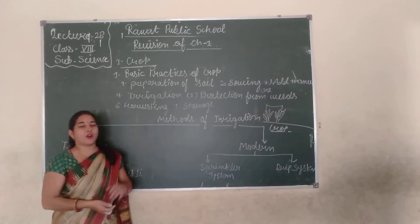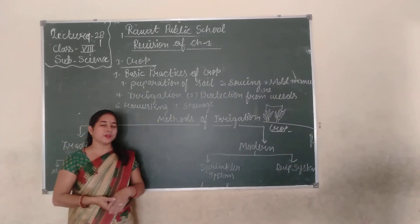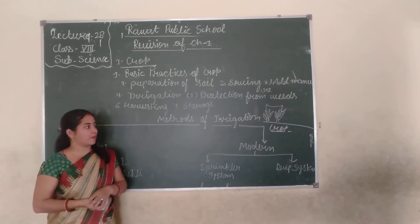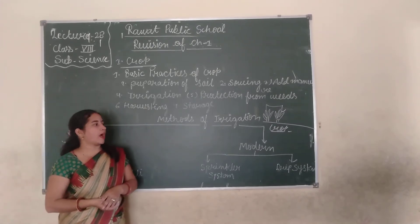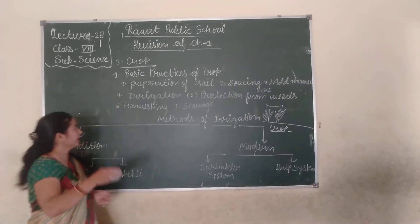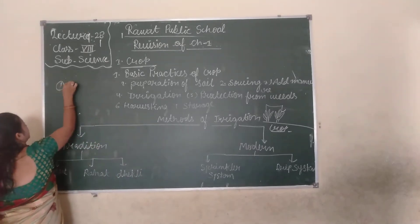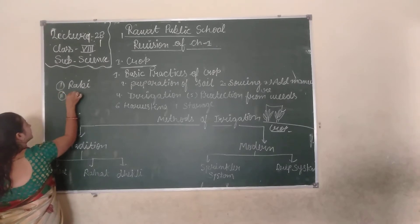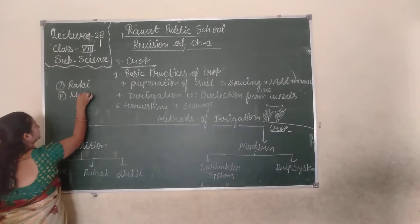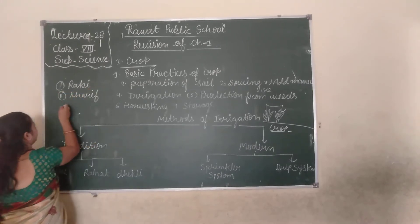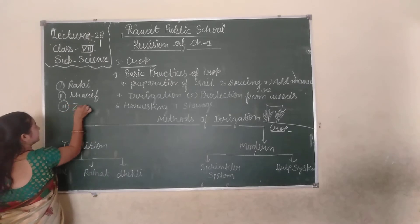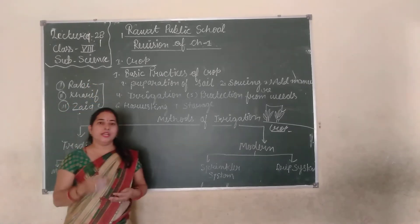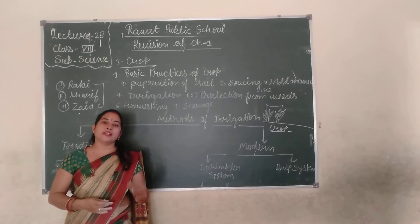Now, types of crops. How many types of crops? There are basically, according to season, 3 types of crops. First is Rabi. Second is Kharif. And the third is Zaid crops. So the three types are: Rabi, Kharif, and Zaid crops.